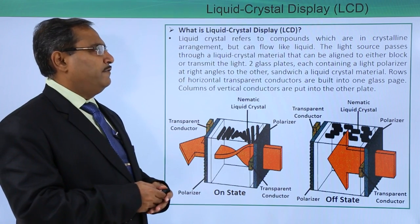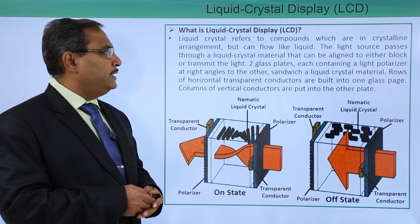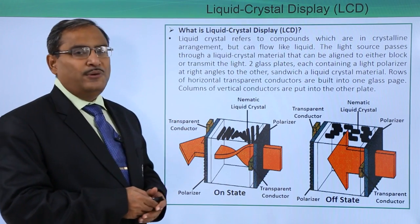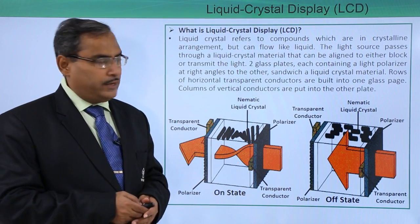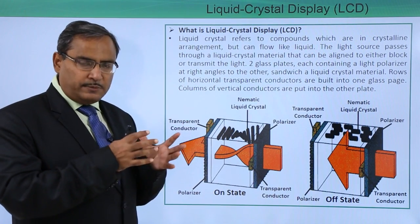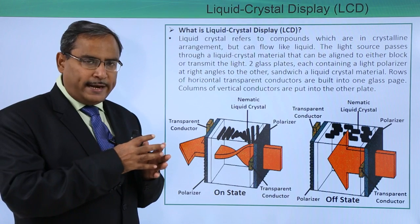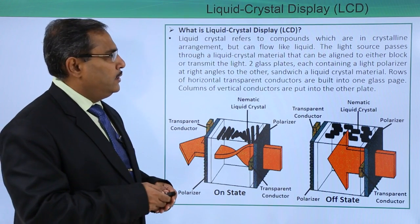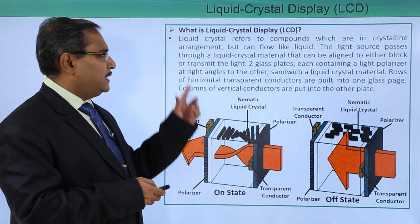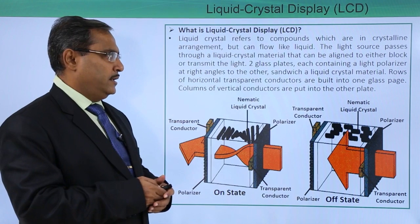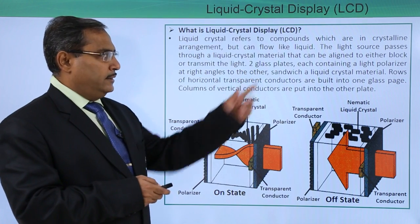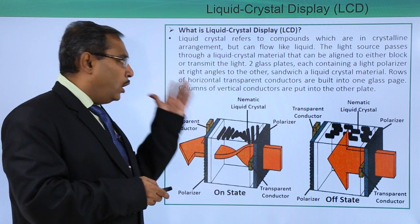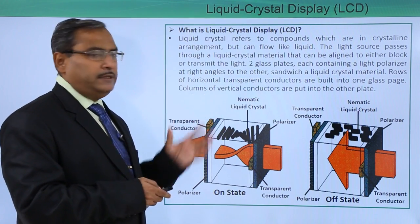Liquid crystal refers to compounds which are crystalline in arrangement but can flow like a liquid. So liquid crystal is nothing but a crystalline arrangement that can flow like a liquid. Light source passes through a liquid crystal material that can be aligned to either block or transmit the light.